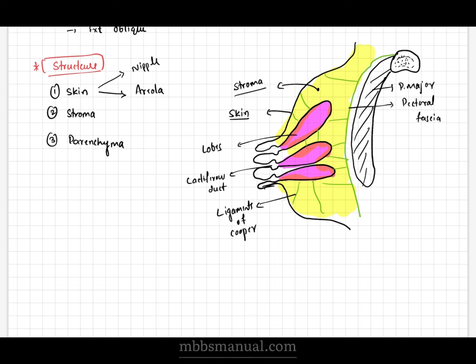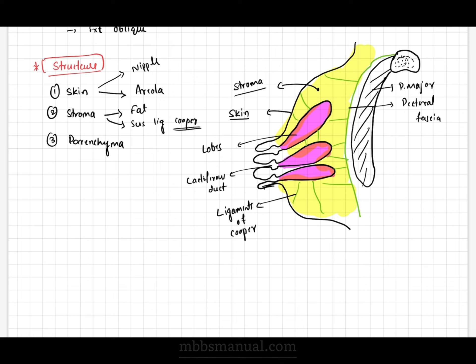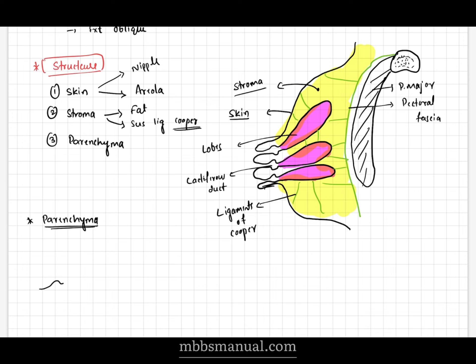When it comes to stroma, it contains connective tissue and fat. In connective tissue, there is one important ligament called the suspensory ligament of Cooper. It mainly gives contour and shape to the breast.